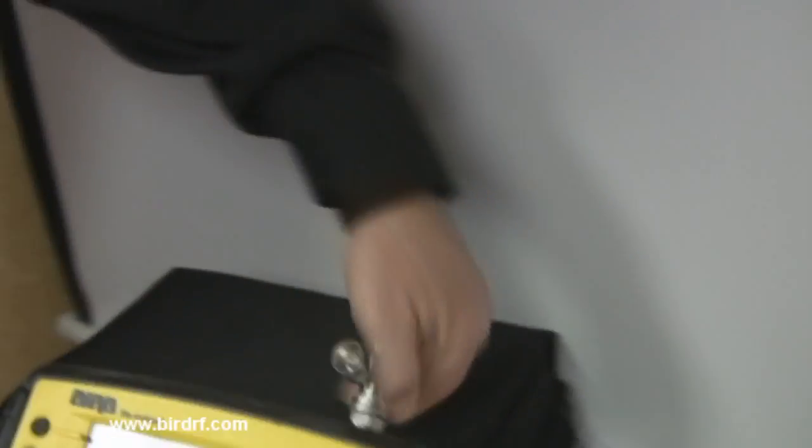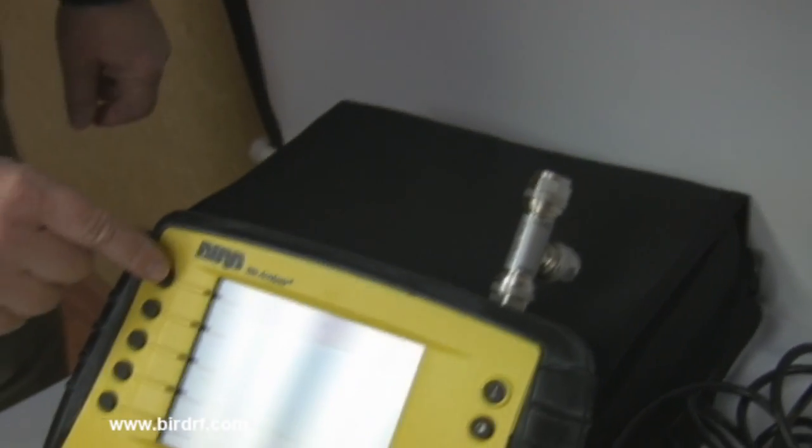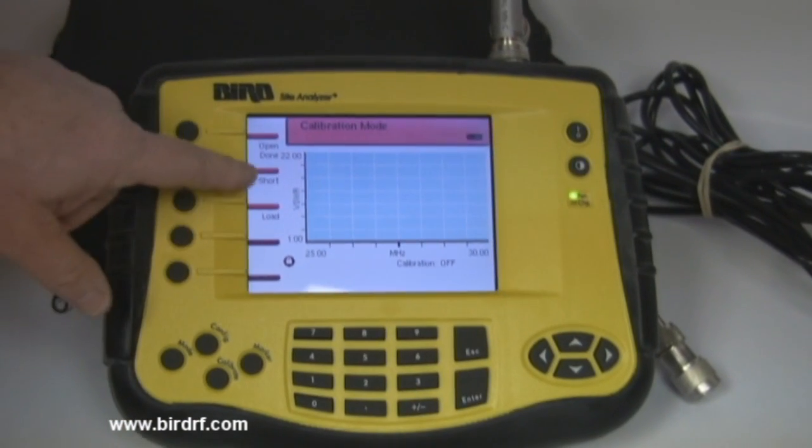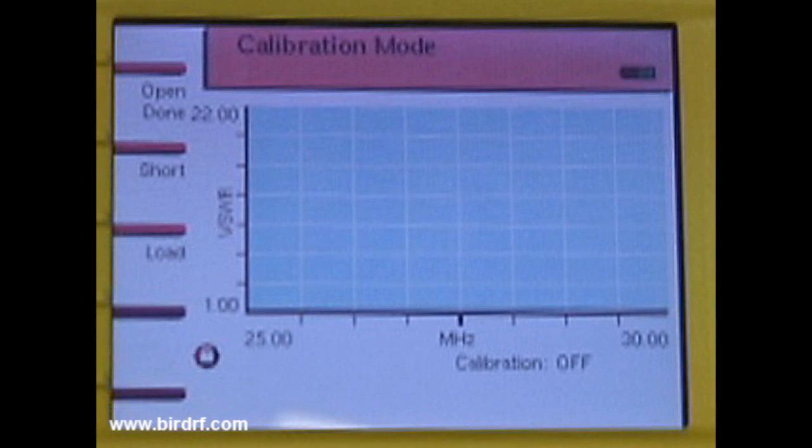Next, connect the cal combo open to the test port of the sight analyzer and press the open button which is the top button on the left side of the SA screen. Wait for the done indication. This is the notification that the calibration procedure has been performed with the open.